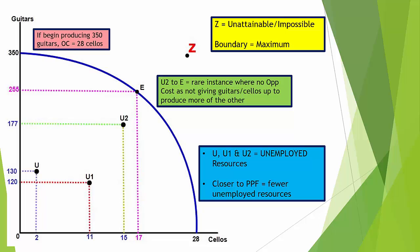The movement from U2 to E is an interesting example: it shows we can move from within the PPF to a point on the line without sacrificing production of one good for another. At U2 we were producing 177 guitars and 15 cellos, but at point E we have more of both — 255 guitars and 17 cellos. This is a rare case on a PPF where there is no opportunity cost, because we gain more of both goods. However, if we'd moved to a point below 177 guitars on that line, there would be some opportunity cost.